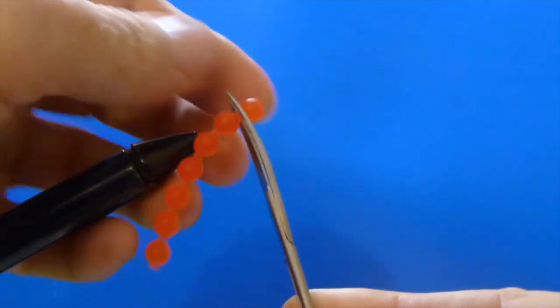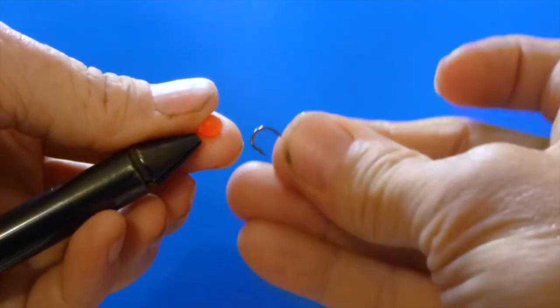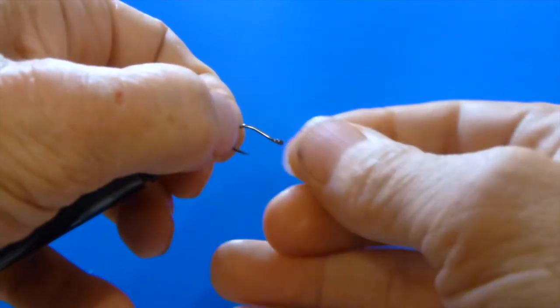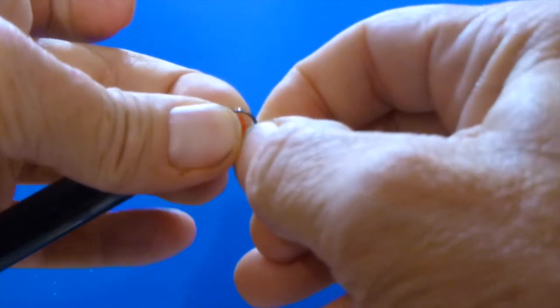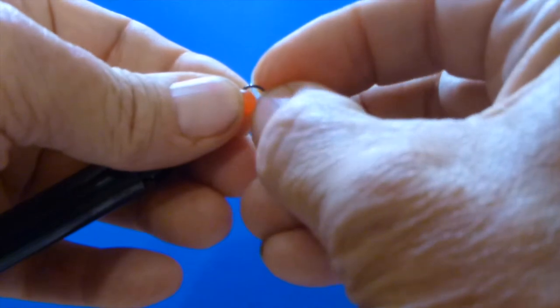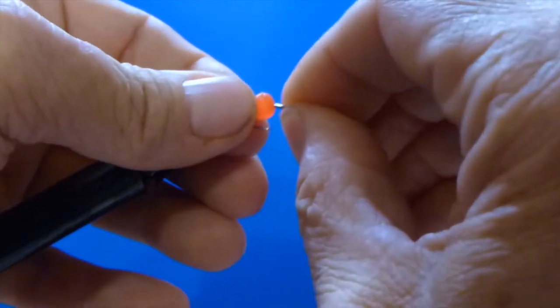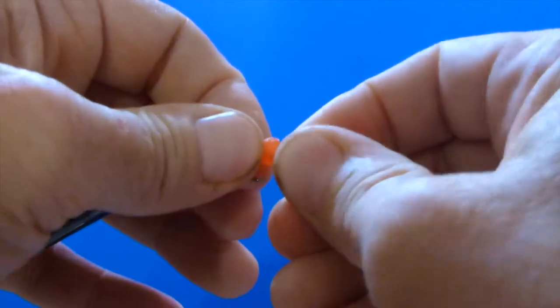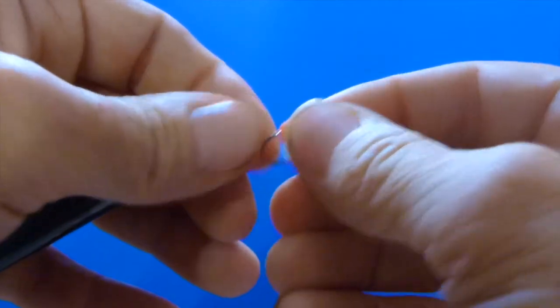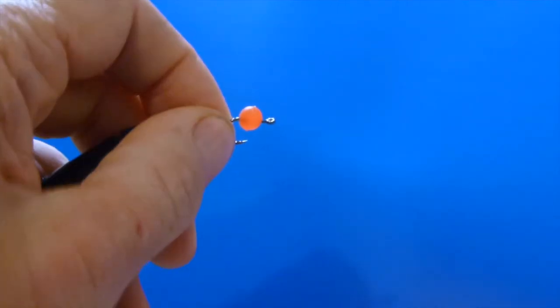Now this is really simple. They come strung, they're made out of like silicone or something like that. And you just cut each individual egg off. Again, I like to use a nice heavy hook because we want this to sink down and we want these eggs to roll along the bottom when we fish them. So you just simply cut it off, string it on the hook, and it is that simple. And that catches the kokanee like crazy.